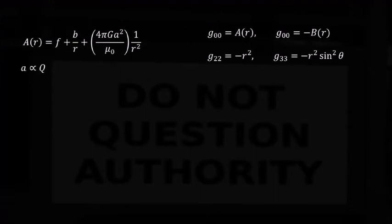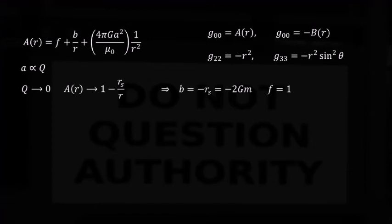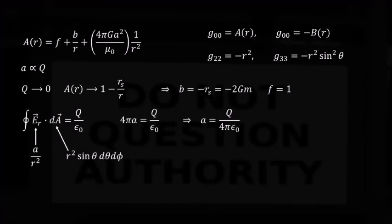Well, we know that a must be proportional to the electric charge of the electron q. So in a limit as q goes to 0, the metric must reduce to the Schwarzschild metric. So b is minus the Schwarzschild radius and f is 1. Okay, what about the constant a? We can use Gauss's theorem, which says that if we integrate the electric field over a closed surface, we get the charge within the surface divided by the electric permittivity of empty space. If we plug in our solution for the electric field, we get that a is q over 4 pi epsilon naught.